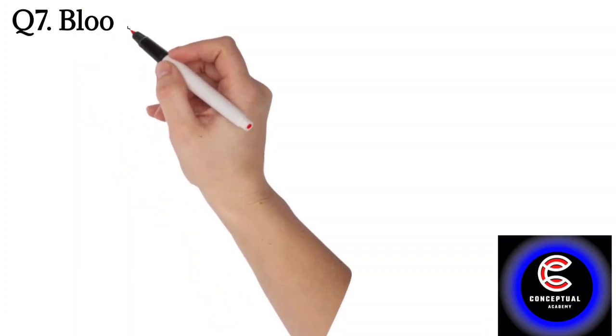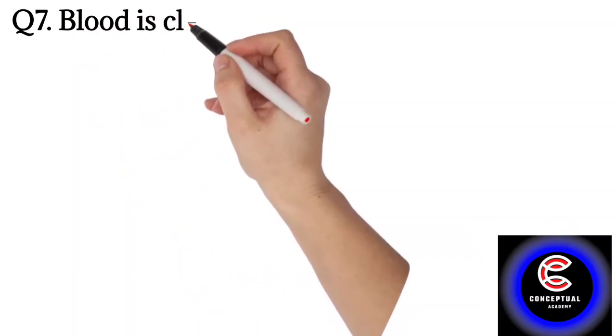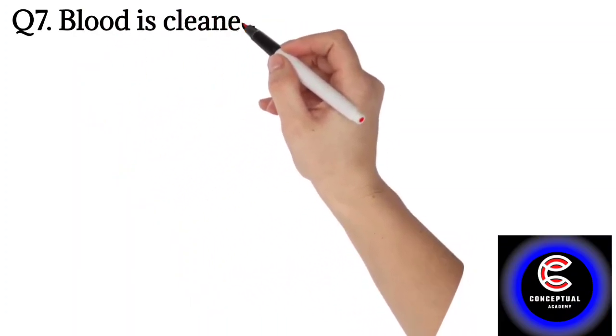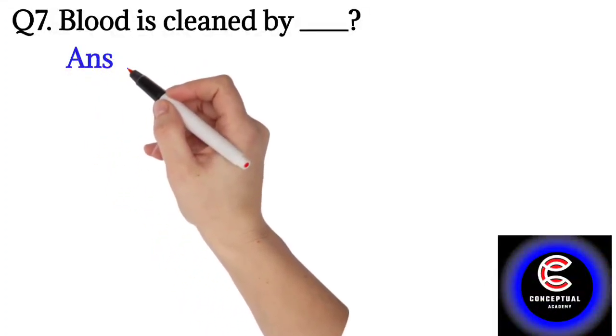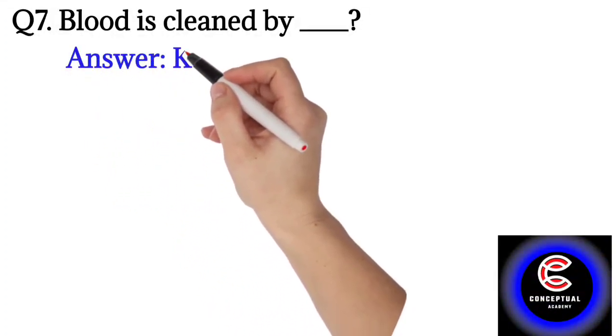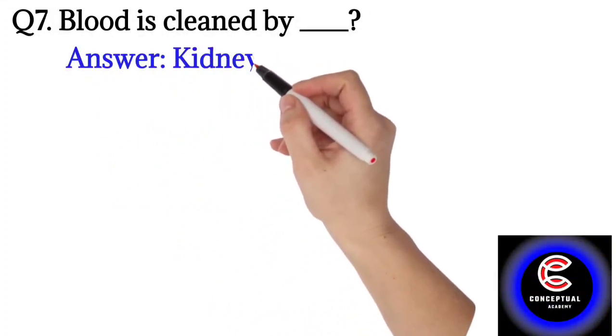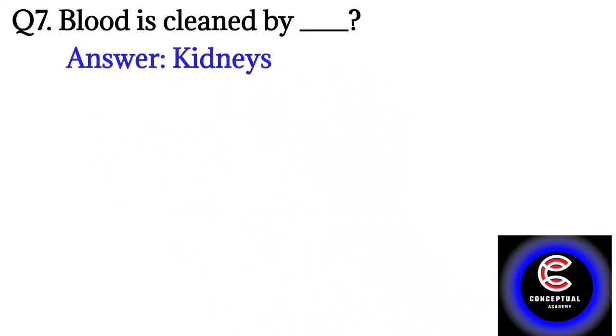Question number seven: blood is cleaned by the kidney. So the answer is kidney.